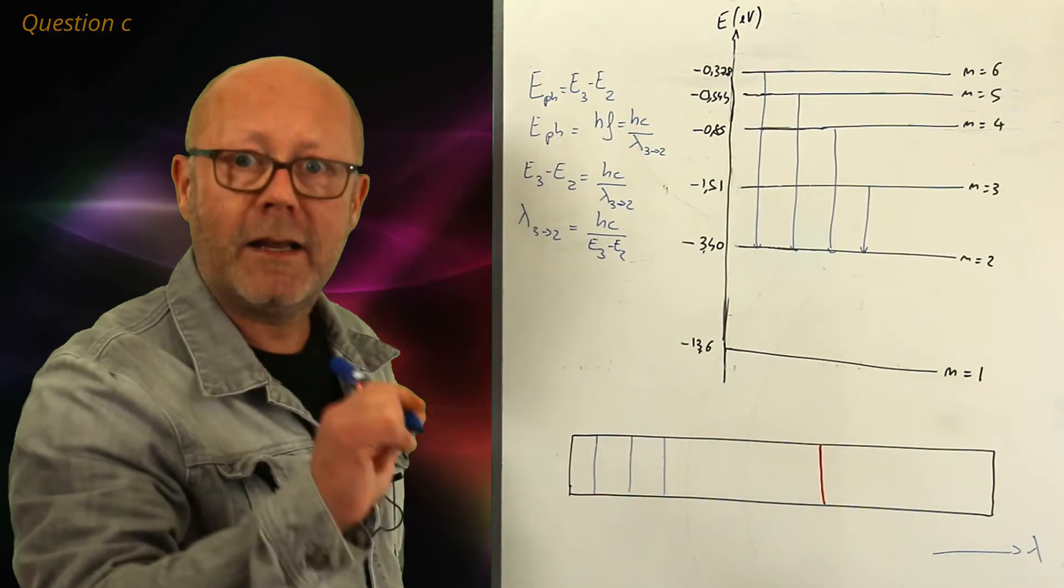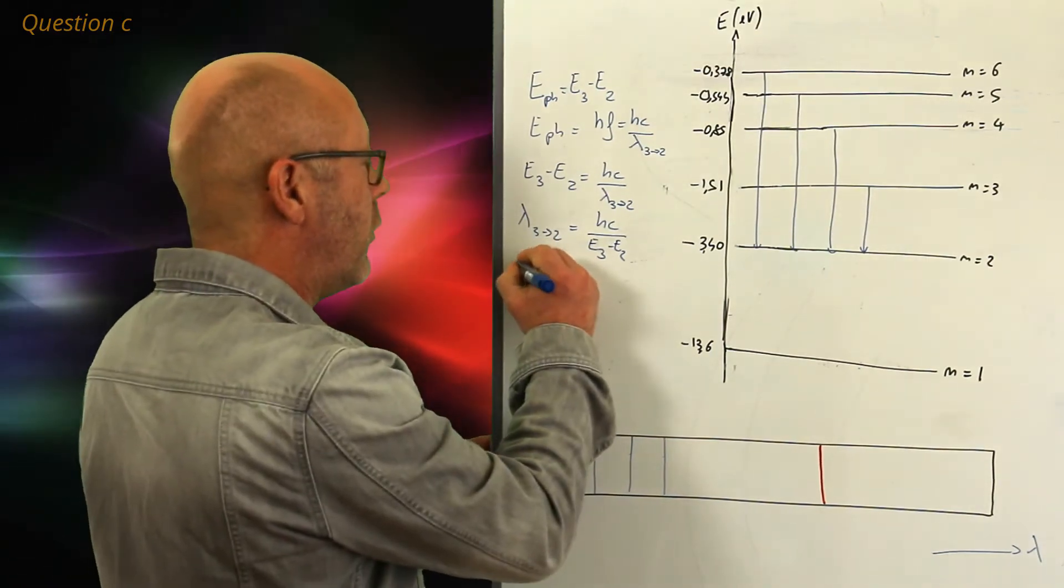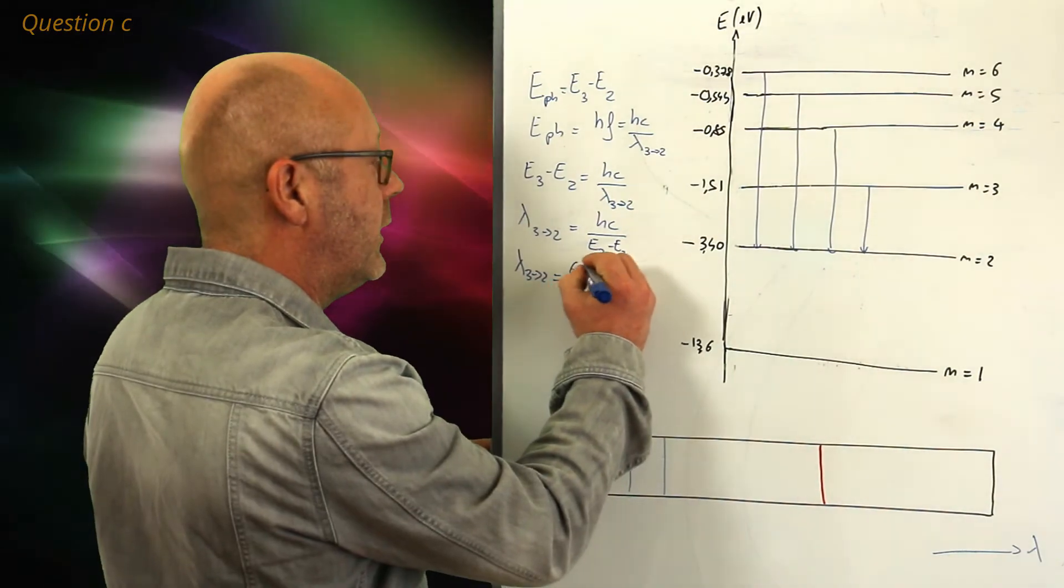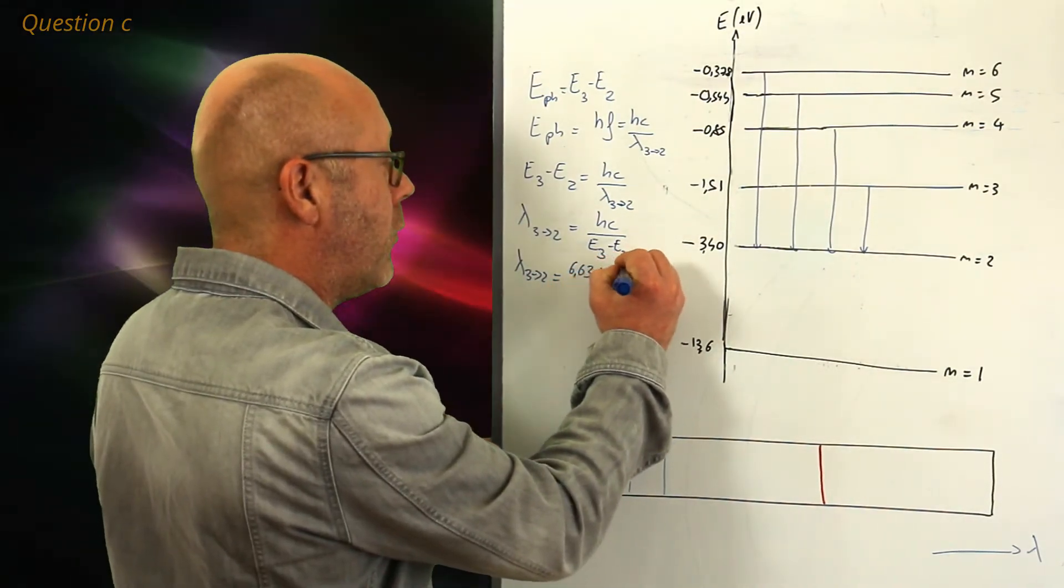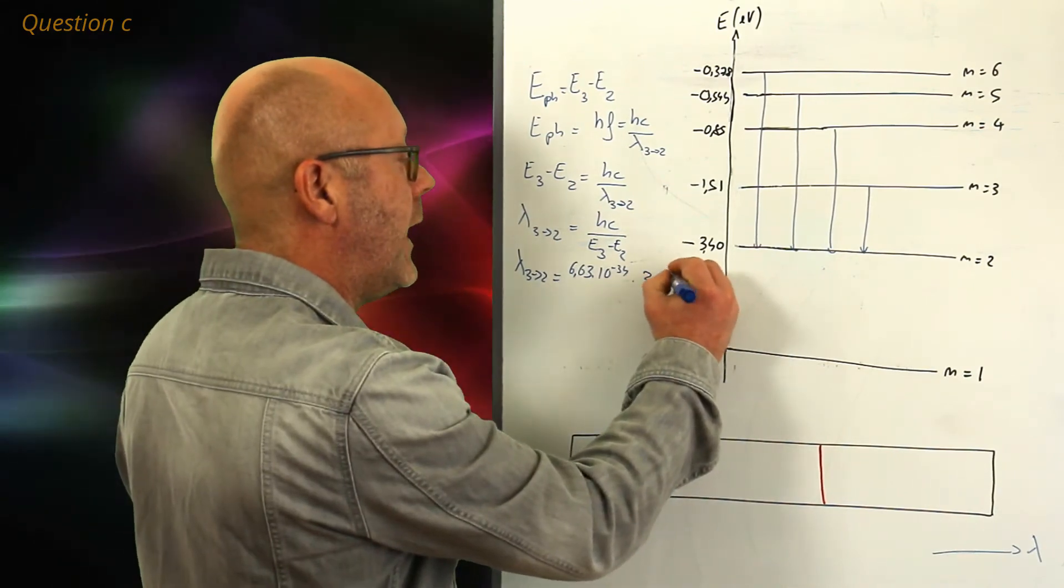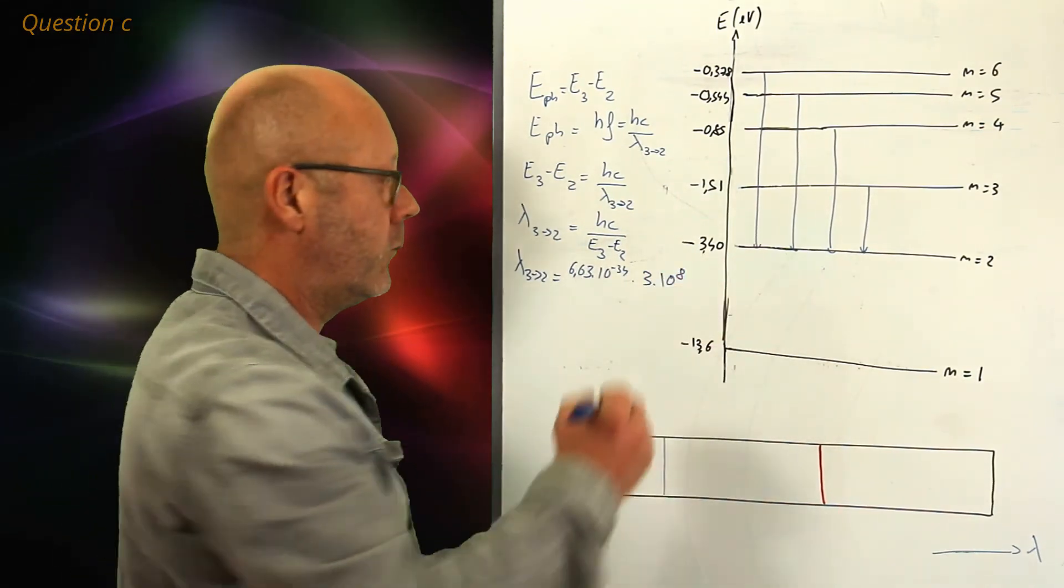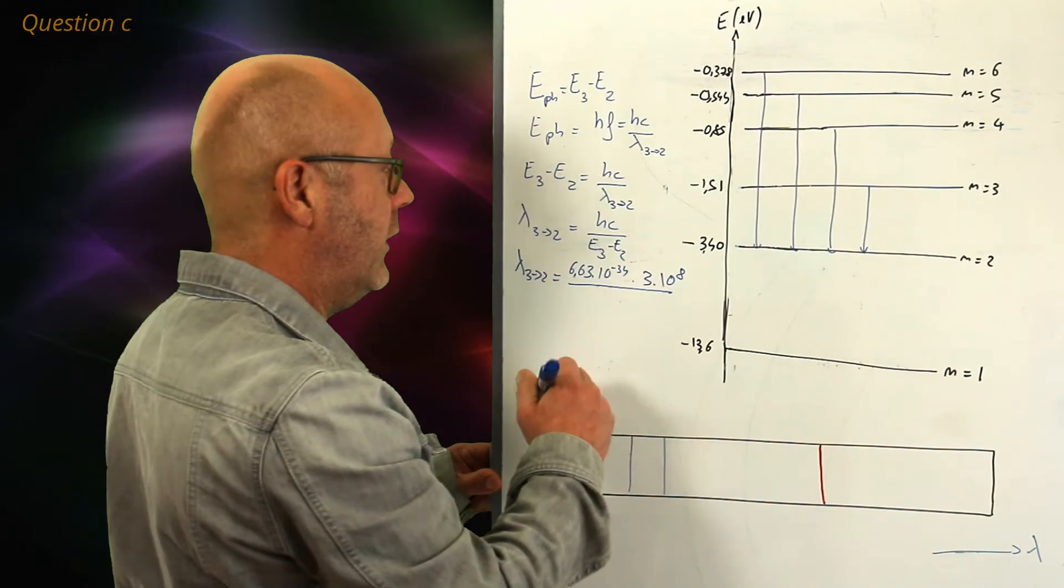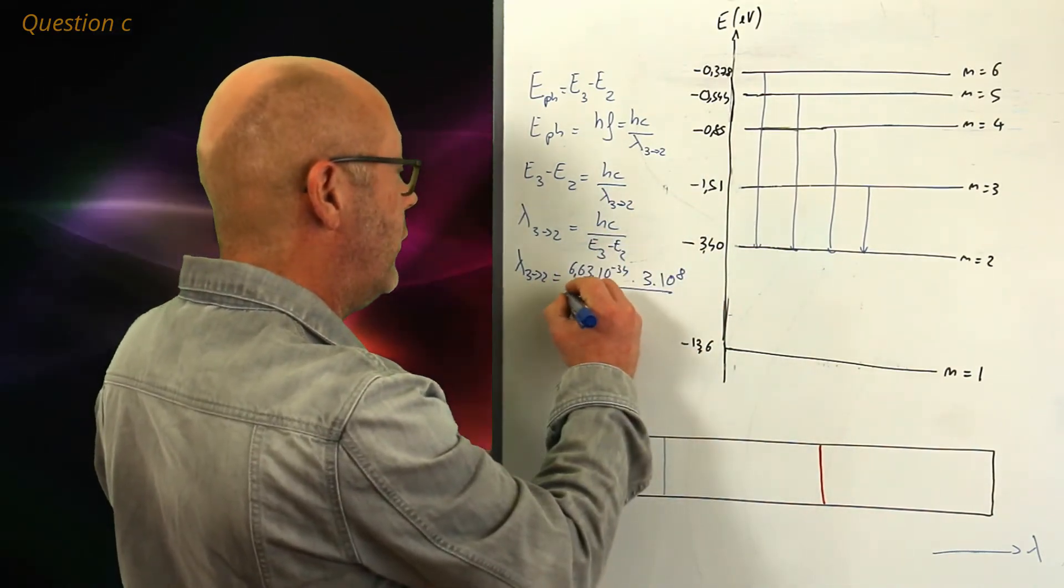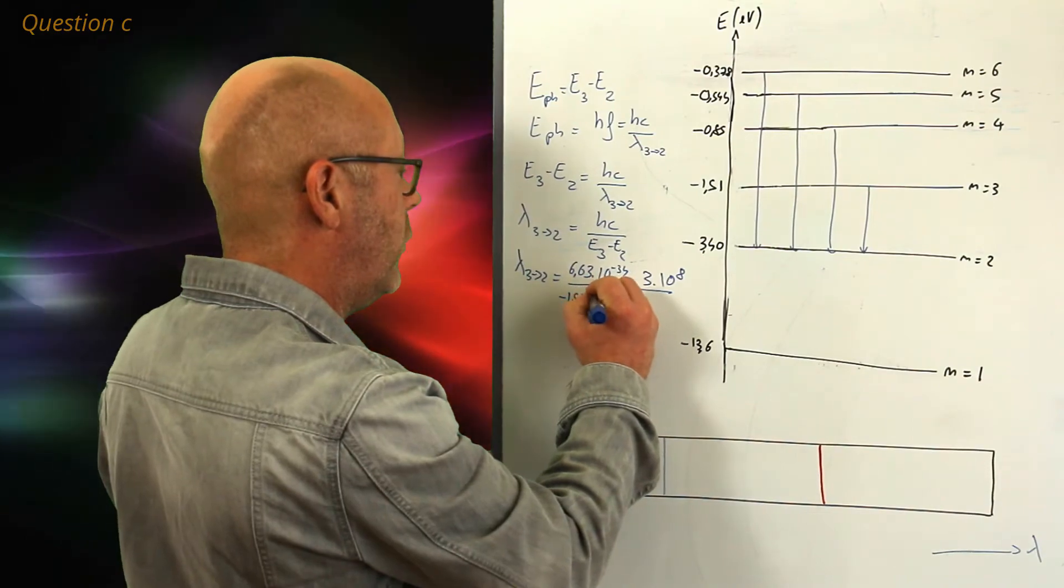Let's do that. Let's plug in the numbers. So, I've got lambda 3 to 2 equals 6.63 by 10 to the minus 34, this is a Planck constant. Then, 3 by 10 to the 8, which is the speed of light. Then, the difference of energy, so from 3 to 2. So, that would be from minus 1.51 plus 3.40.